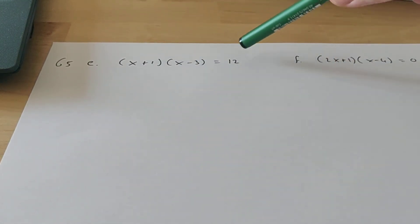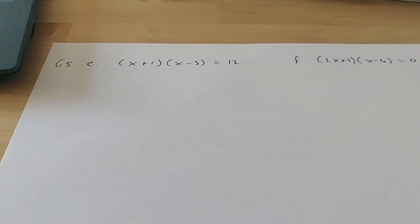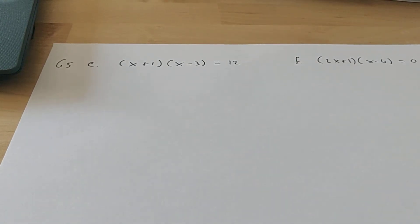Because here you have two brackets, and unfortunately there's not a 0 here, but a 12. So I'd like to show you what you have to do.